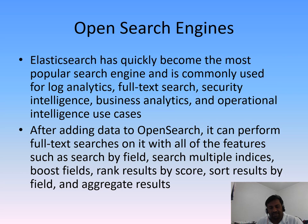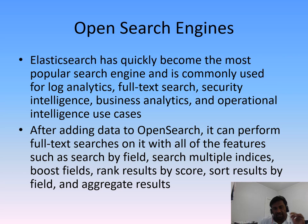After that, Elasticsearch changed their licensing policy and became SPL (Server-Side Public License), so OpenSearch came into the scene. OpenSearch can perform full-text searches with all features such as search by field, search multiple indices, boost field, rank results by score, sort results by field, and aggregate results. These are additions to what Elasticsearch offered.